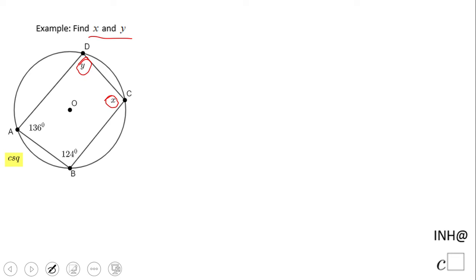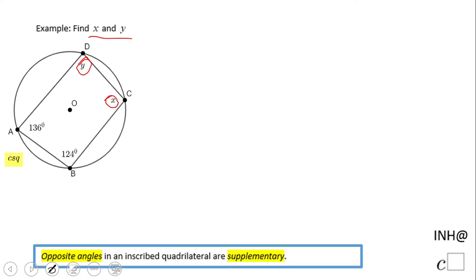What's important about this picture is we have a quadrilateral inscribed in a circle. For that reason, we have this property: opposite angles in an inscribed quadrilateral are supplementary. For instance, angle A and angle C are opposite angles, so those two angles are supplementary.